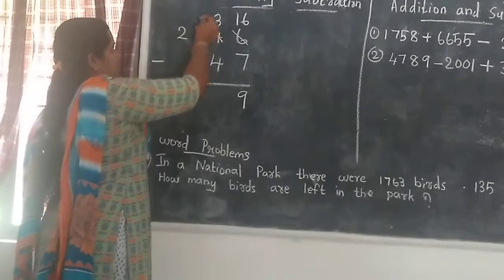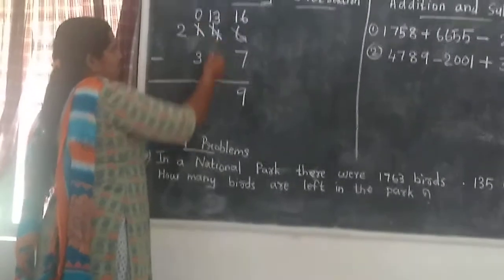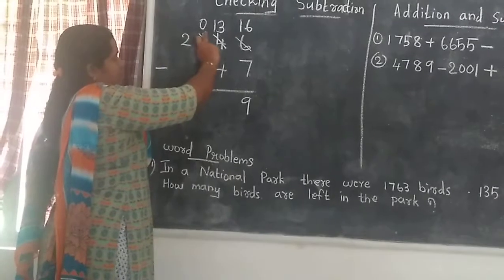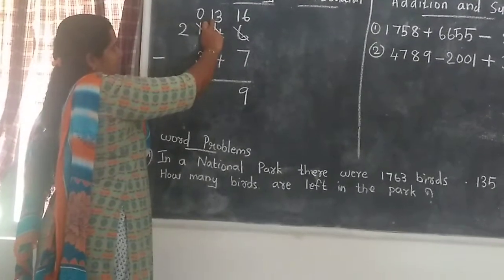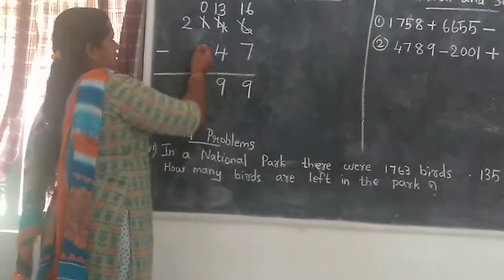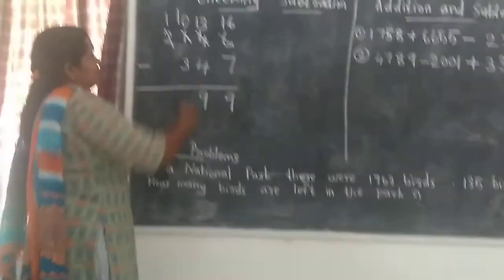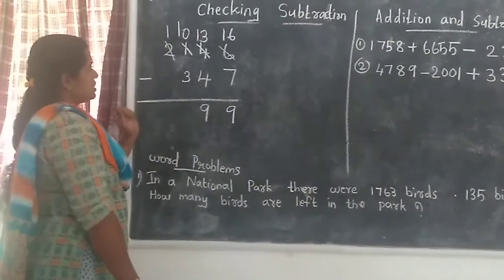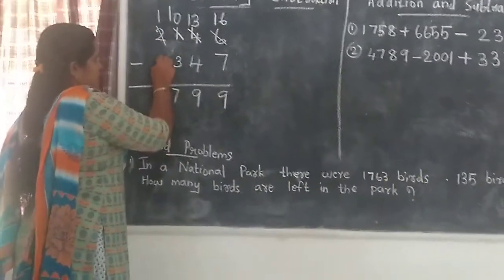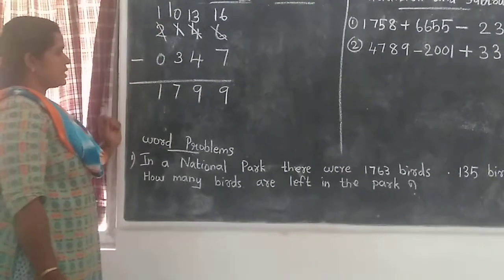Now in the tens place we have 3, and we need to subtract 4. We cannot take 4 from 3, so we borrow from the hundreds place. This becomes 13. 13 minus 4 is also 9. Moving to the hundreds place, this becomes 10. 10 minus 3 is 7. In the thousands place there is no number to subtract, so 1 minus 0 is 1.